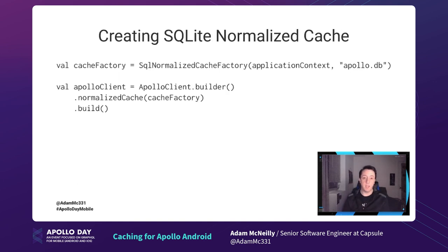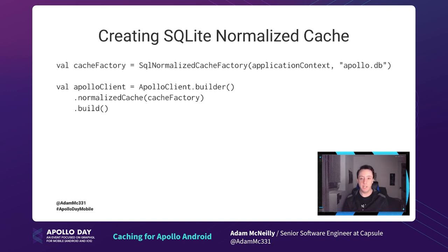The SQLite cache is even easier to set up. We just call the built-in SQL normalized cache factory method, give it our application context, give it a name for the database, and then apply that onto our Apollo client builder. And we're good to go to start using this cache.